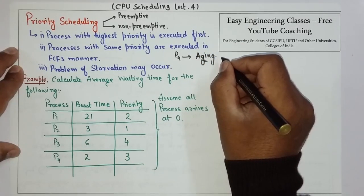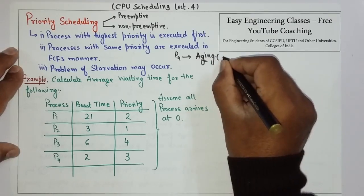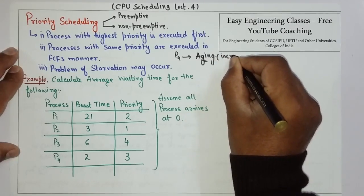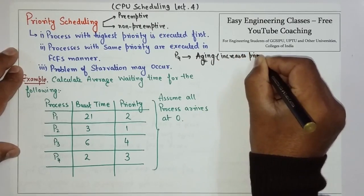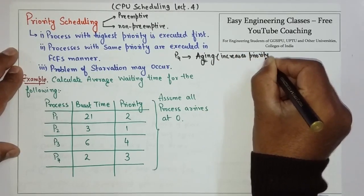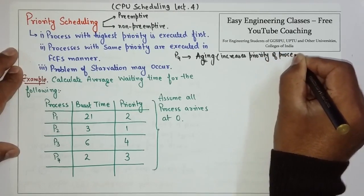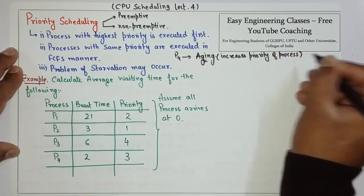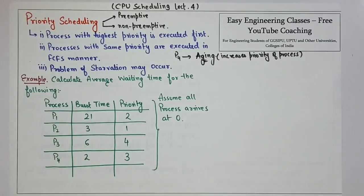That problem can be solved with the help of aging. Aging is a technique that gradually increases the priority of a process over time, preventing it from being blocked indefinitely.